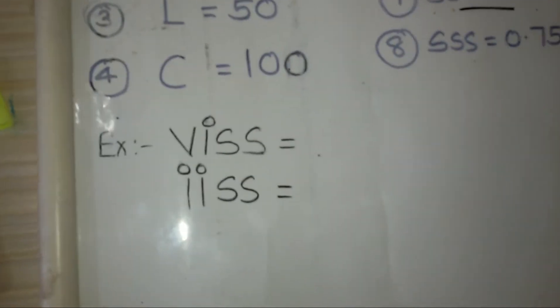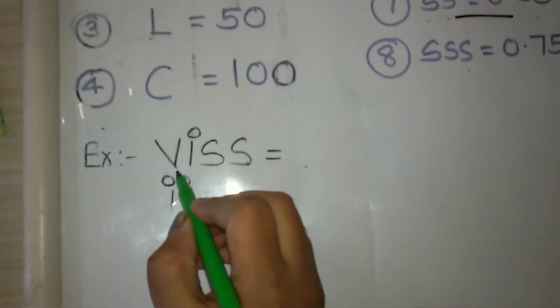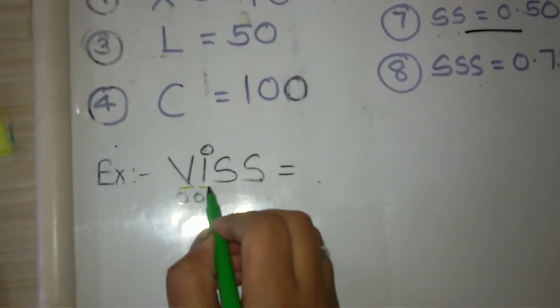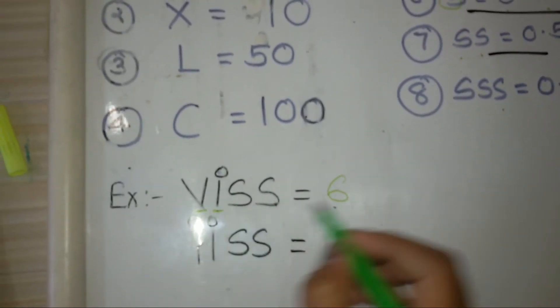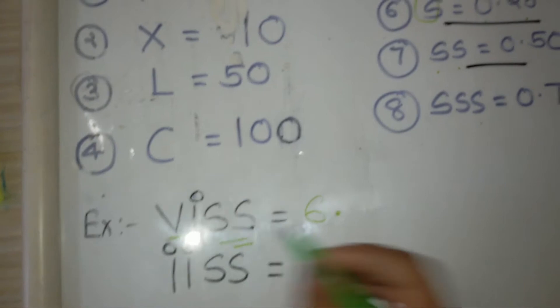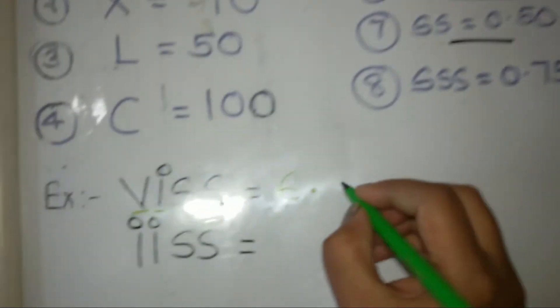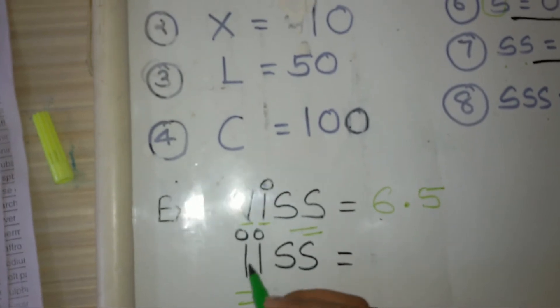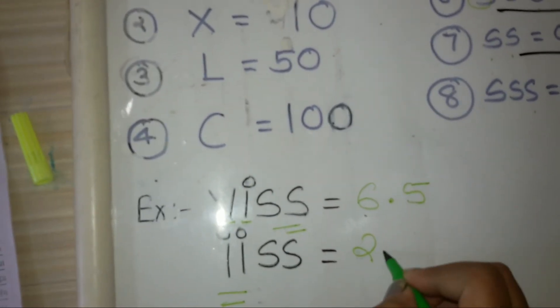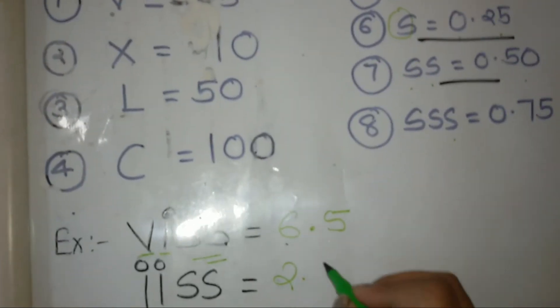Now let's do some examples for Roman numbers. Here, V equals 5 plus 1, so it is 6. Point SS equals 0.5, so it is 6.5. Whereas here it is 1, 2, so it is 2.5.